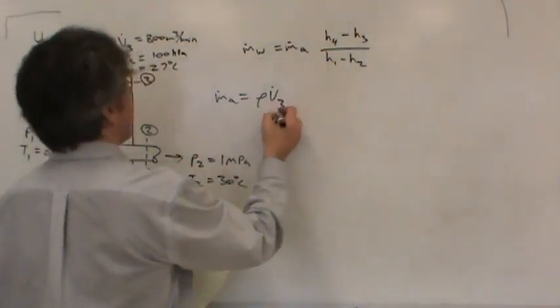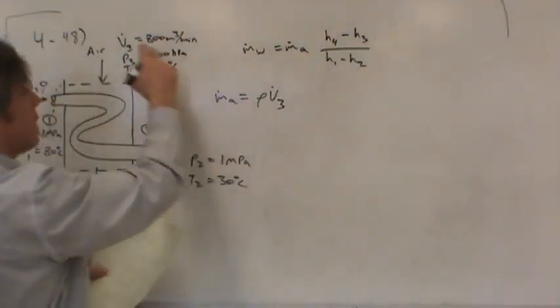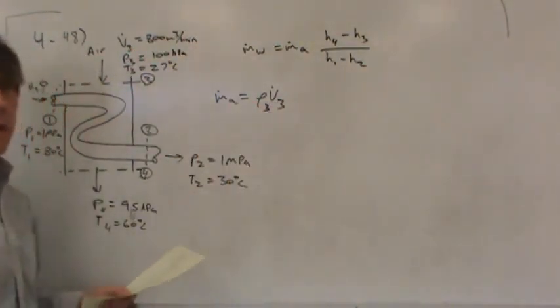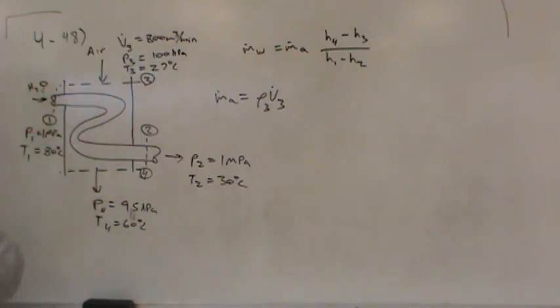So if I want the mass flow rate of the air, I better take the volume flow rate coming in in state three and multiply it by the density in state three. That would give me the mass flow rate of the air. Now, the mass flow rate of the air here equals the mass flow rate here. The volume flow rate may be different because the pressure and temperature change, but the mass flow rate will be the same.